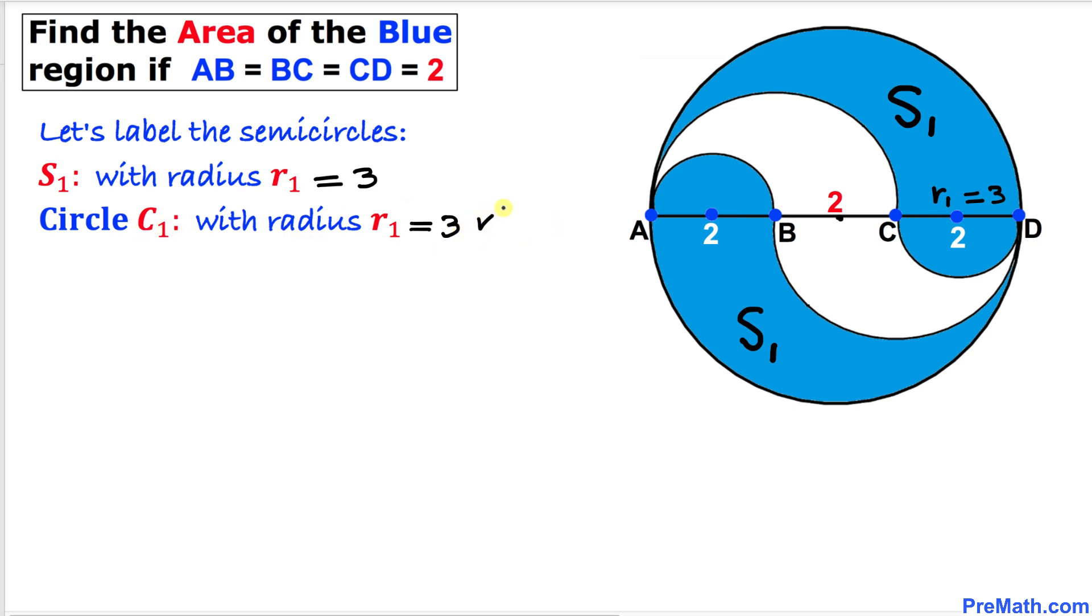Now let's focus on this next semicircle. I'll call this one S2, and this is S2 as well on the other side. Its radius is 2 units, so R2 equals 2 units. Thus, R2 is 2 units. If we combine these two semicircles, we get a complete circle C2 with radius R2 equal to 2 units.